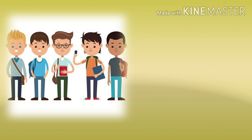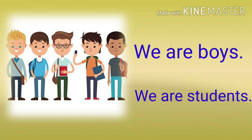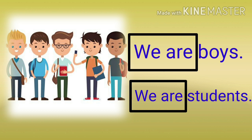Friends, what do you see in this picture? Boys! Yes, there are many boys. Let's make a sentence. We are boys. We are students. Friends, from what we have learned, what comes here? 'We are.' So we will box 'we are.' We are boys. We are students.